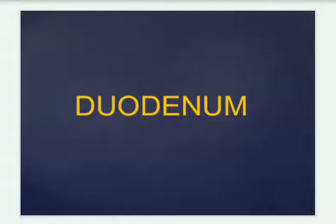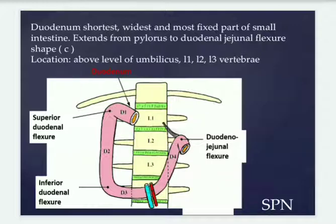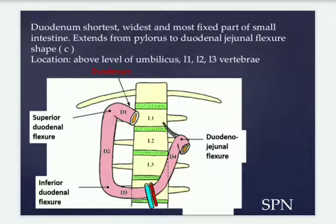Hello physios, the next topic on anatomy is the duodenum from abdominal volume 2. The duodenum is the shortest, widest, and most fixed part of the small intestine, extending from the pylorus to the duodenal jejunal flexure. It is in the form of the letter C, and its location lies above the level of the umbilicus, opposite to the L1, L2, L3 vertebrae.